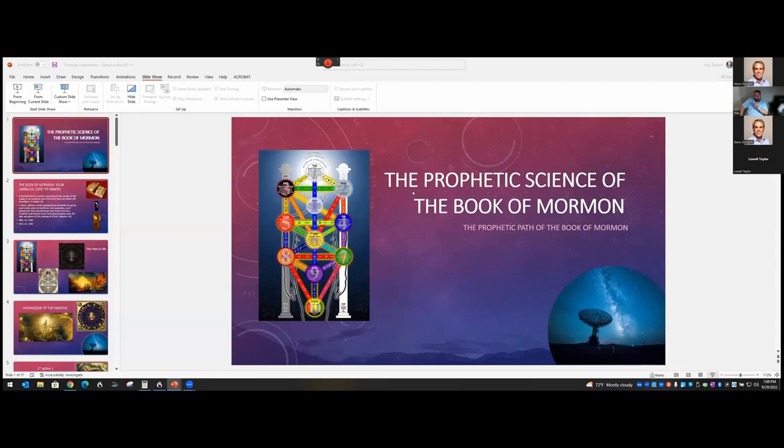When we're talking about the prophetic science of the Book of Mormon or the prophetic path of the Book of Mormon, we really need to define from a Hebraic or Israelite sense what that means. There's a little backdrop to this understanding. It actually didn't originate with the house of Israel. It actually originated with Adam and Eve after they were cast out of the garden. In Jewish lore, when Adam and Eve were cast out of the garden, the angel Raziel came to them and gave them a book.